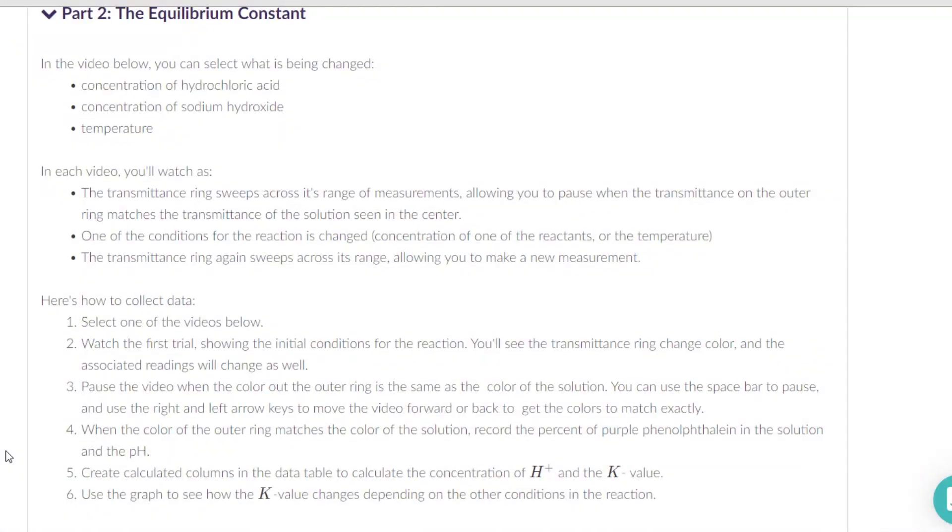Part two has you looking at what happens when you add hydrochloric acid, sodium hydroxide, and you change the temperature. What effect is that going to have either on adding hydrogen ion or the sodium hydroxide takes away hydrogen ion? What effect does that have on the equilibrium concentrations?